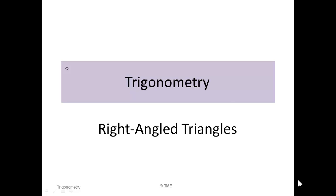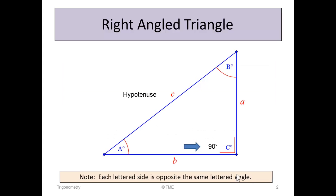Trigonometry. Right-angled triangles. A right-angled triangle is a triangle which contains a 90-degree angle. Opposite the 90-degree angle we have the hypotenuse, the longest side of the triangle, because this is the largest angle in the triangle. And the three sides of the triangle, A, B and C, are opposite their corresponding angles.